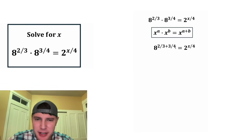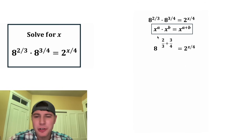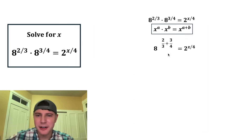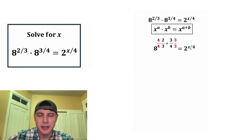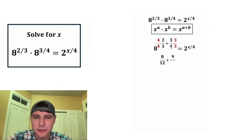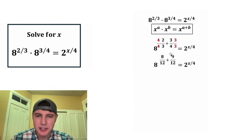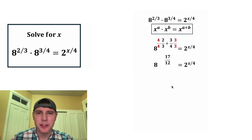It's kind of tricky to add the fractions like this. Let's rearrange them. Now we're trying to add two thirds plus three fourths. Let's give these a common denominator. Let's multiply the left-hand side by four over four and the right-hand side by three over three. Four times two is eight and four times three is 12. Three times three is nine and four times three is 12. Eight twelfths plus nine twelfths is 17 twelfths.